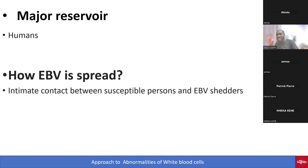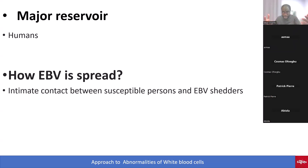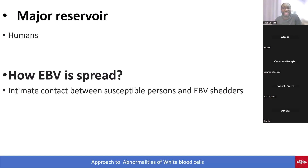Now, the major reservoir for Epstein-Barr virus, which causes infectious mononucleosis, is humans. It is spread through intimate contact between susceptible persons and EBV shedders. Some patients continue shedding Epstein-Barr virus for quite some time after recovering from infectious mononucleosis — that is why I use the term 'EBV shedders.'